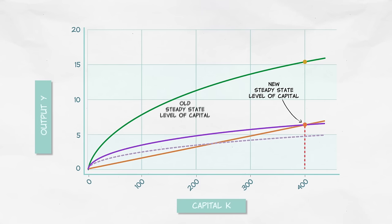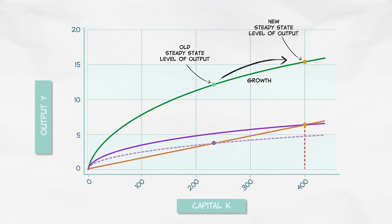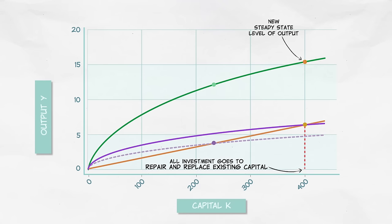The higher savings rate spurs growth for a time, and it does increase the steady state level of output. But at the new steady state, investment once again equals depreciation, and we get zero economic growth. Accumulation of physical capital can only generate temporary growth.